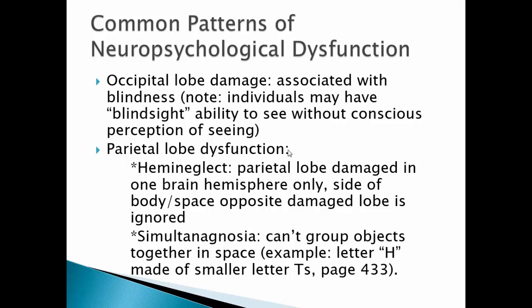Parietal lobe dysfunction is another common pattern. One symptom is hemi neglect, where the parietal lobe is damaged in only one hemisphere and the side of the body or space opposite the damaged lobe is ignored. Another is simultanagnosia, where a client can't group objects together in space. There is an example on page 433 of your textbook — a dialogue with a client who can see individual letter Ts but not the large letter H formed by those Ts.